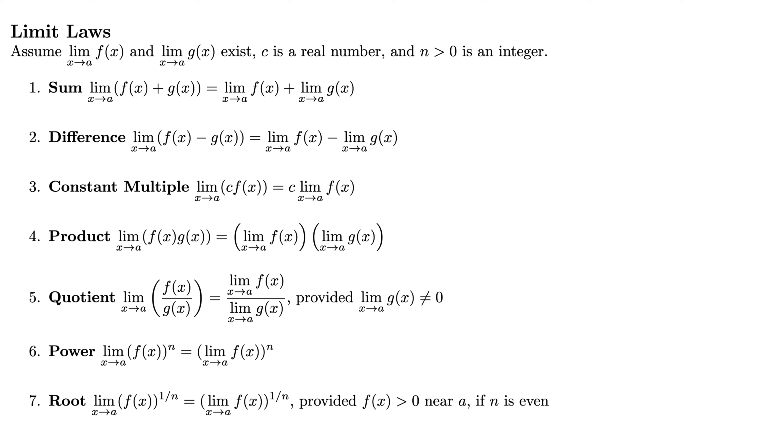So one and two, sum and difference limit laws. The first one says the limit as x goes to a of f(x) + g(x) is the sum of the limits. So we have the limit as x goes to a of f(x) plus the limit as x goes to a of g(x). Same thing for the difference, just replace the sum with the difference.